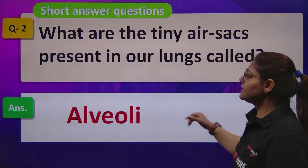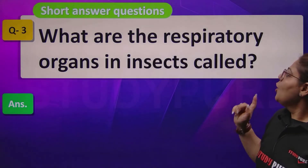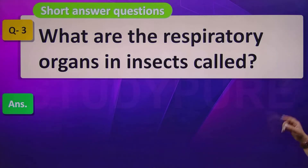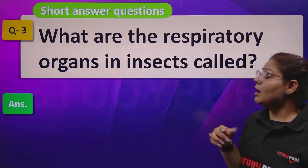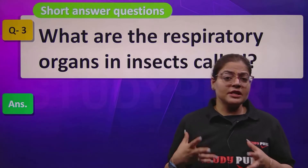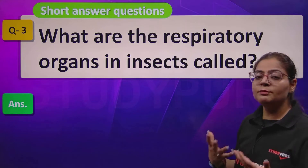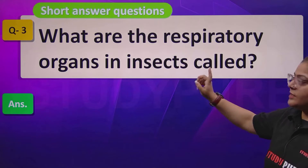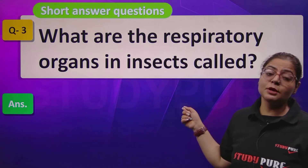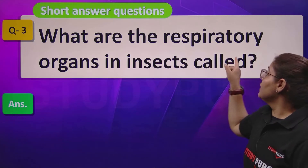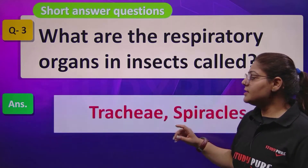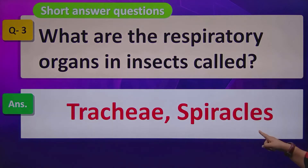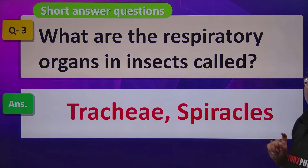Question number 3: What are the respiratory organs in insects called? This reminds us that we studied respiration in different organisms — not all living things use lungs. Insects are one example. They respire through trachea and spiracles, which are tiny holes present in the body of insects.